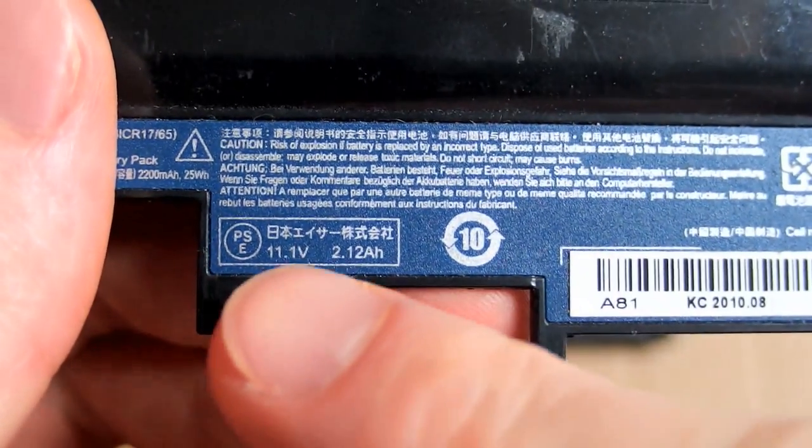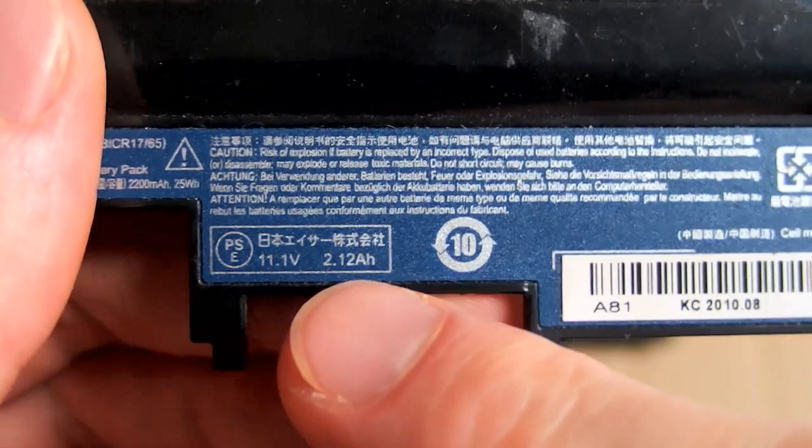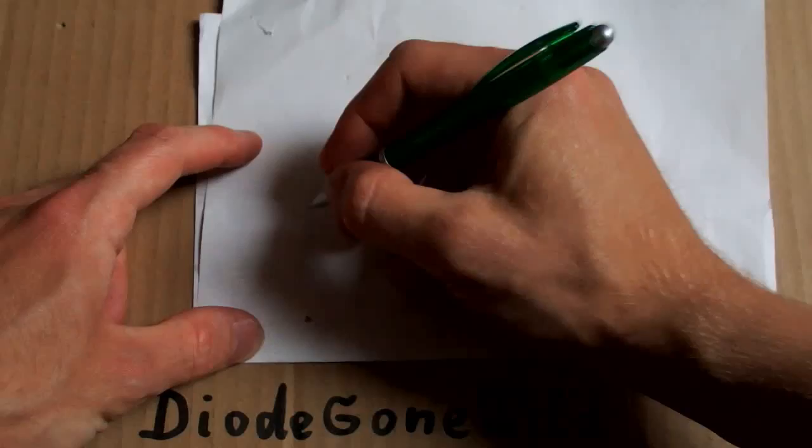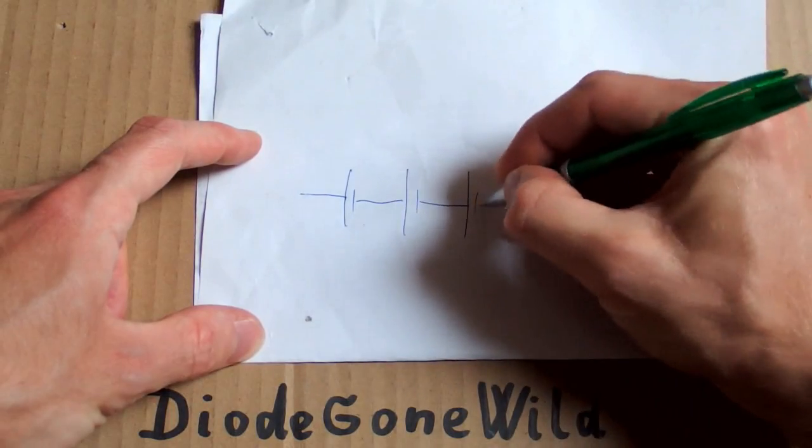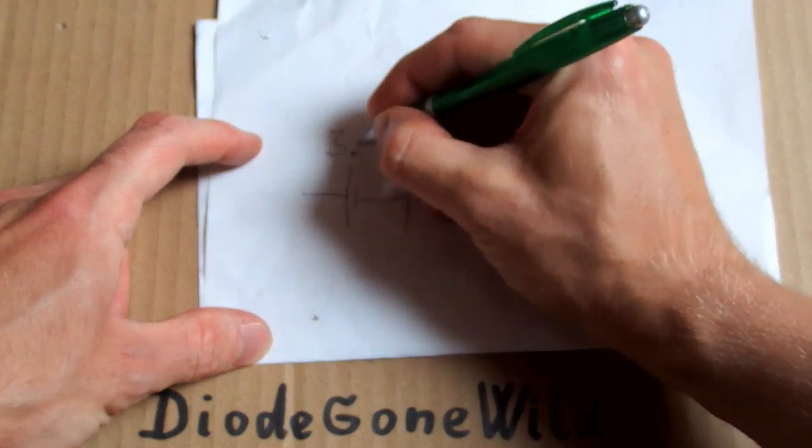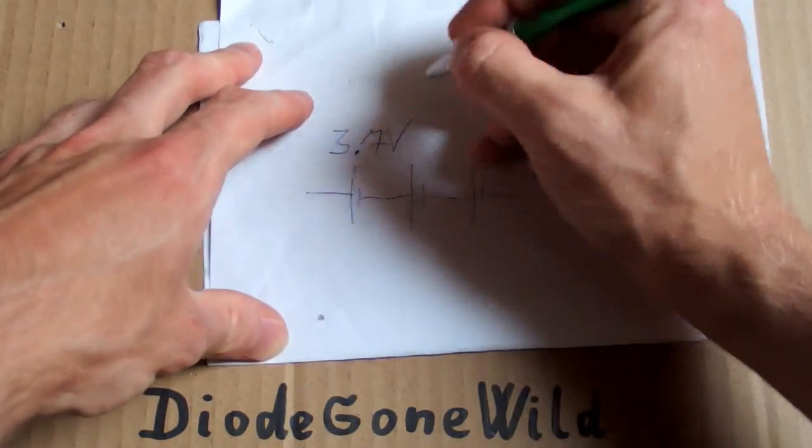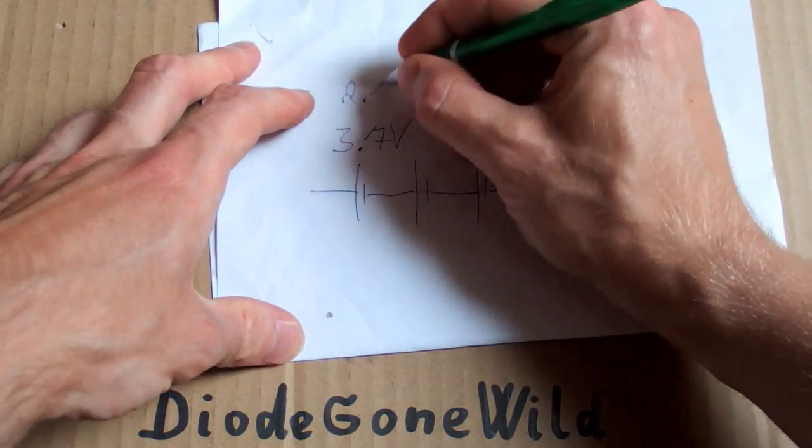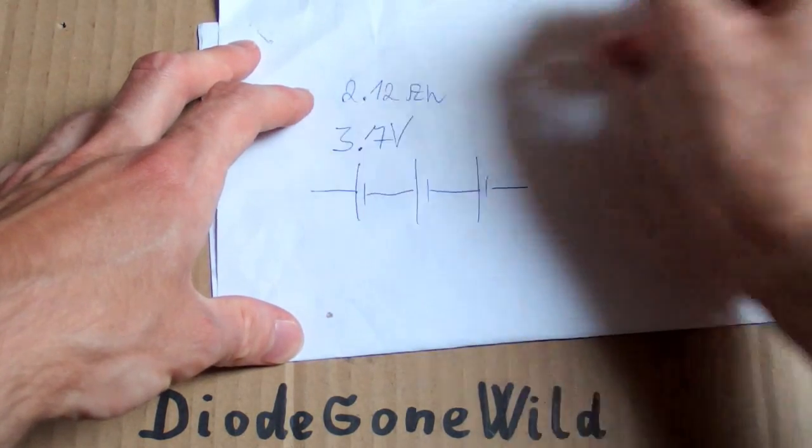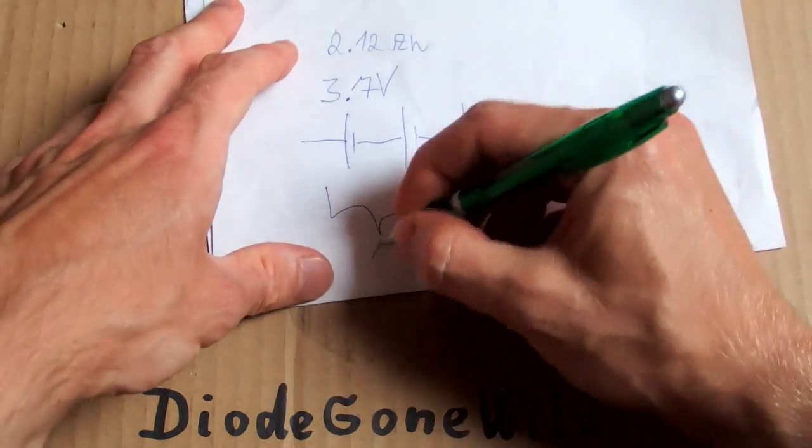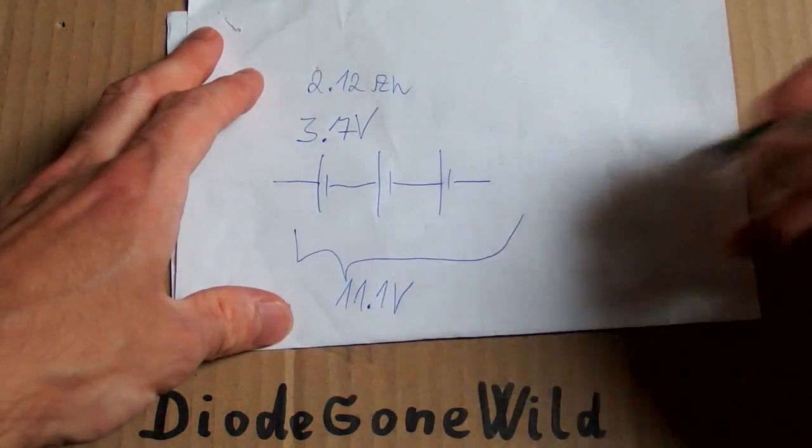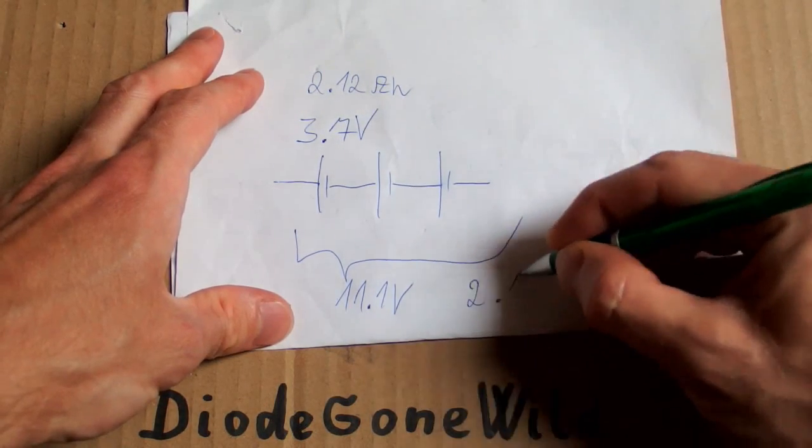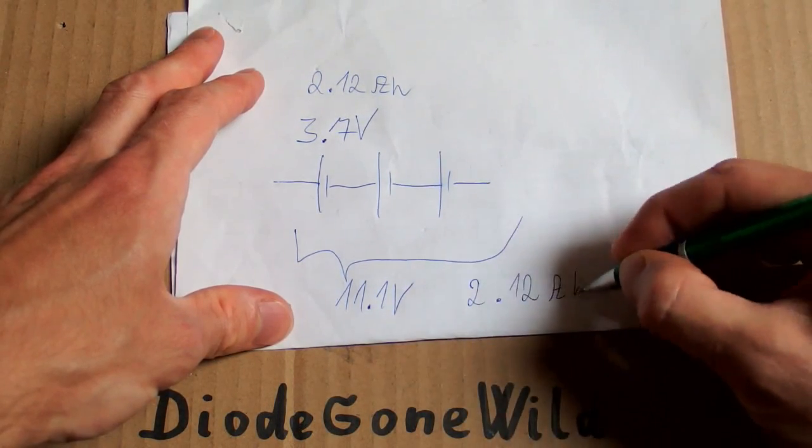This one says 11.1 volts and 2.12 amp hours. There were three cells in series, each of them was 3.7 volts and each of them was 2.12 amp hours. In total this battery pack makes 11.1 volts and the total capacity still is 2.12 amp hours because they are in series.